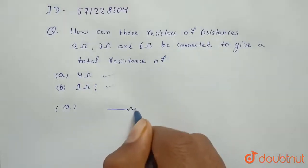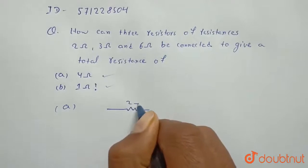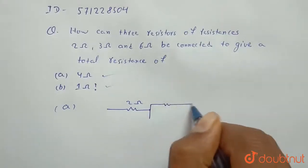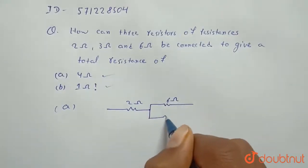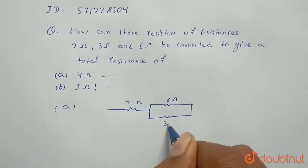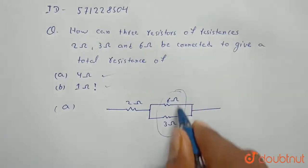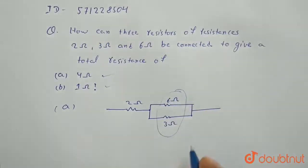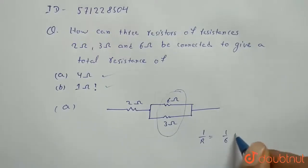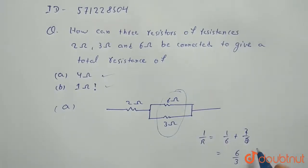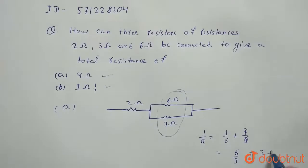If you connect 2 ohm resistance in series with parallel combination of 6 ohm and 3 ohm, then R equivalent of 6 ohm and 3 ohm will be 6 plus 1 upon 3 which will be 2 upon 6, it means 6 by 3, which will be 2 ohm.